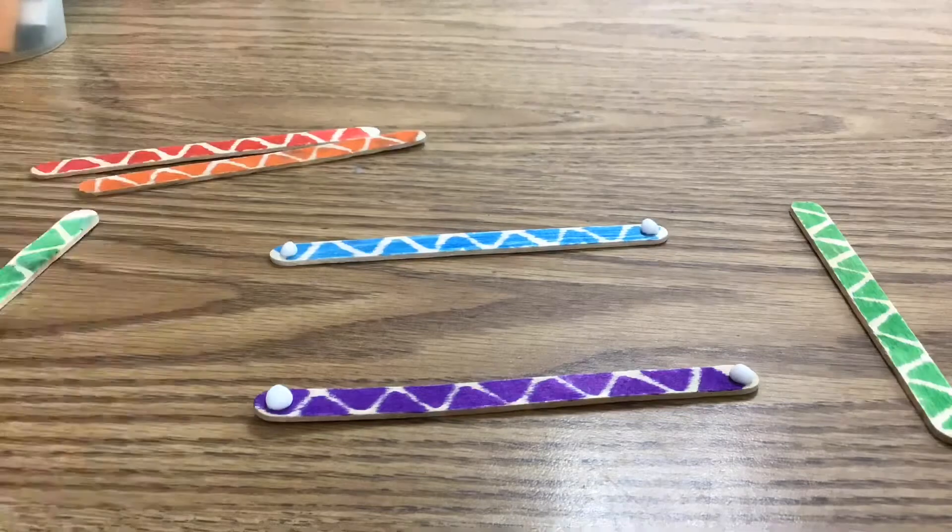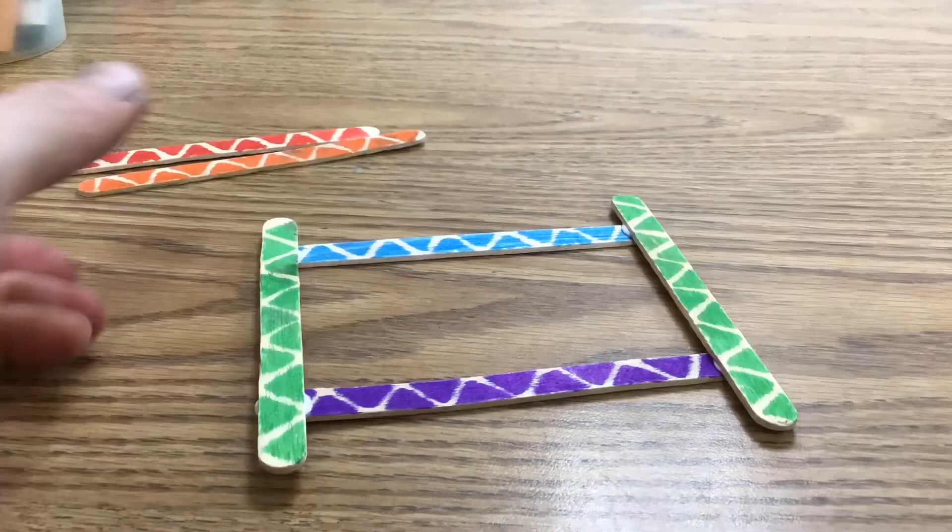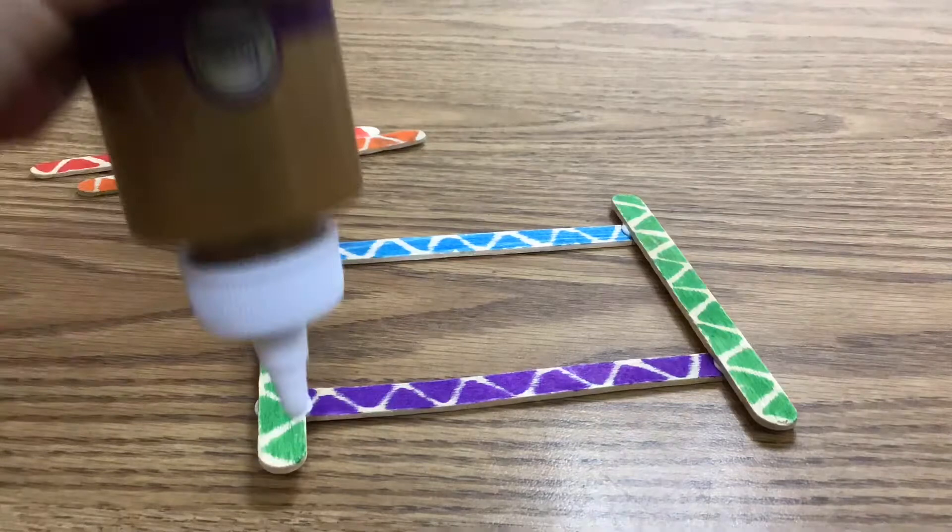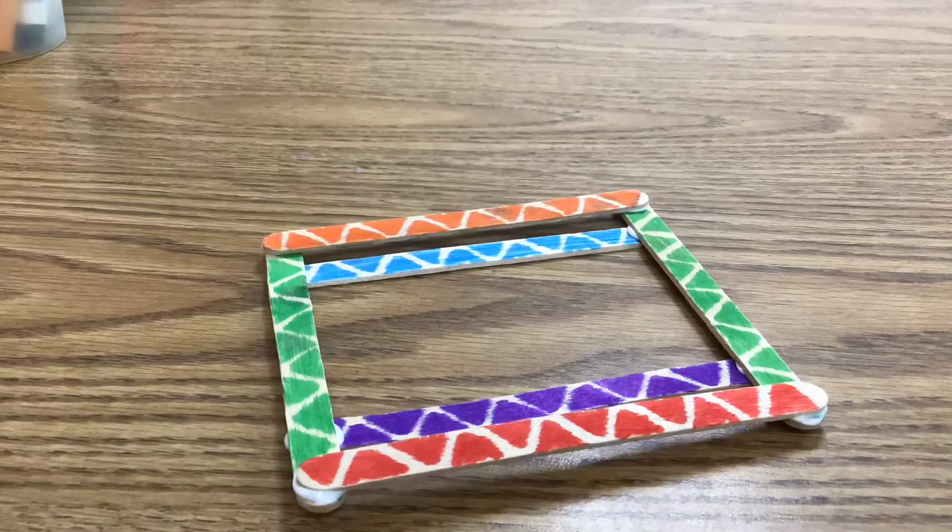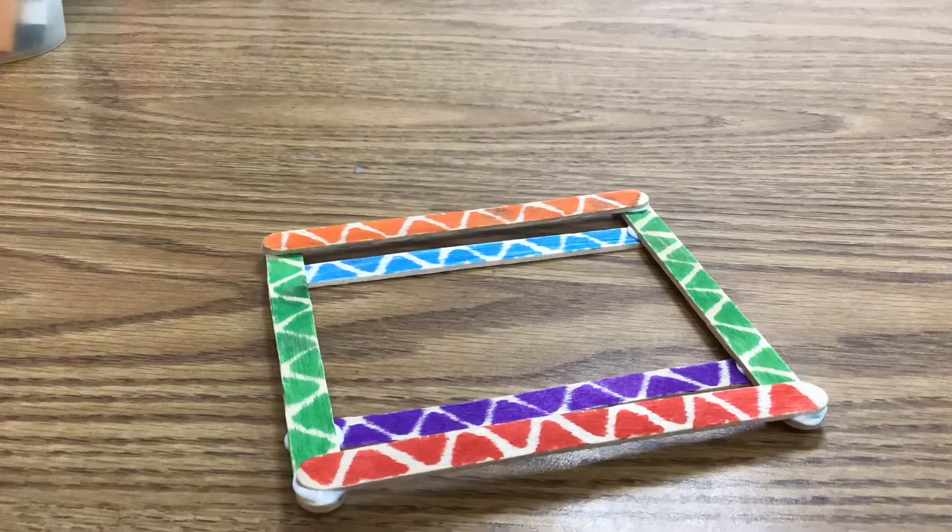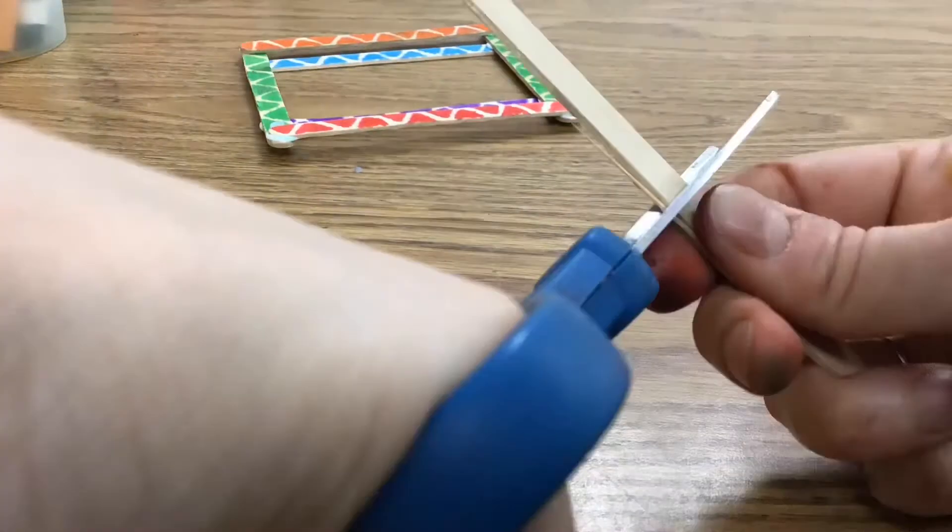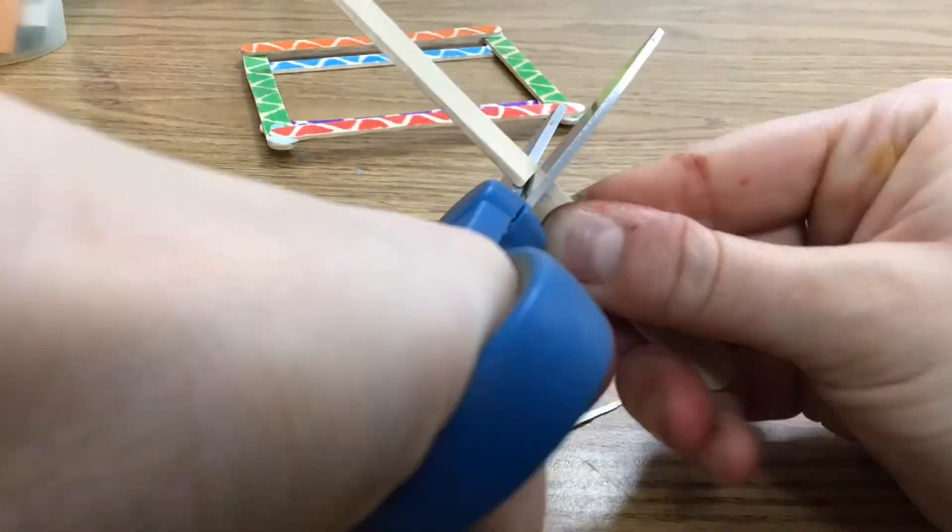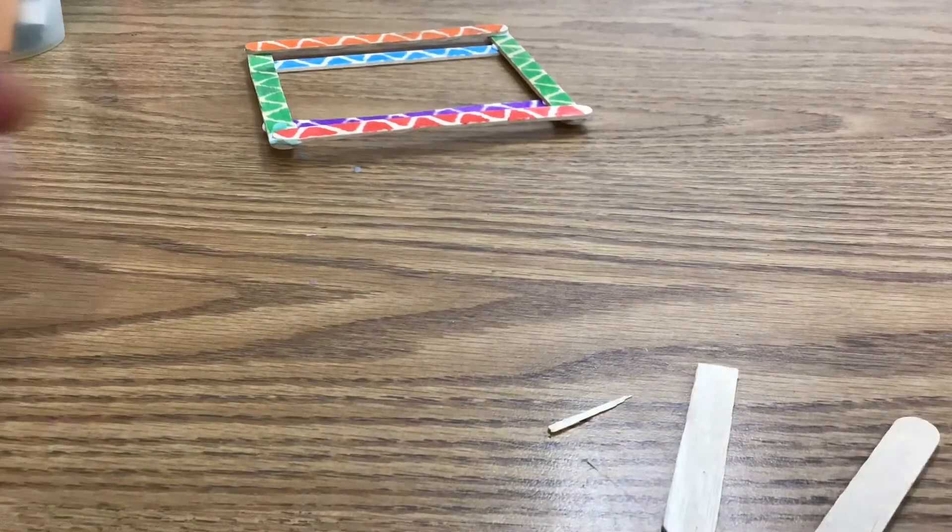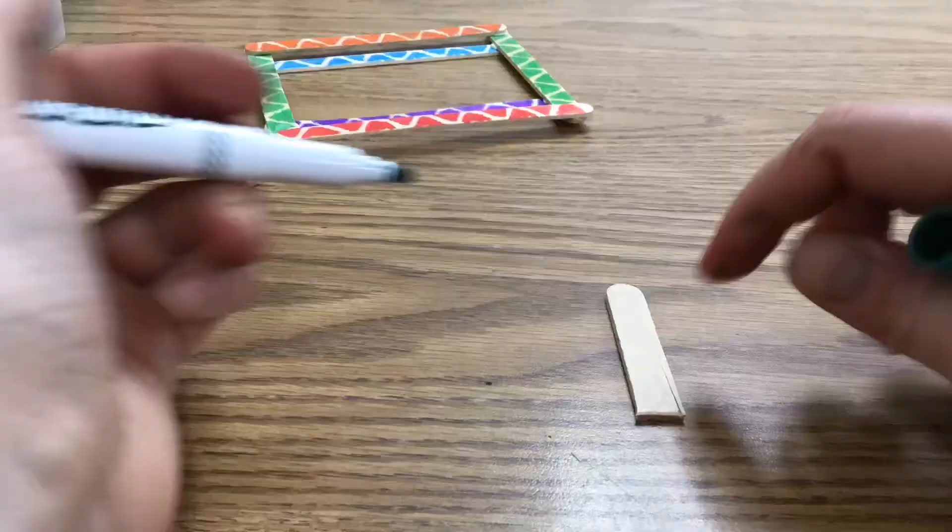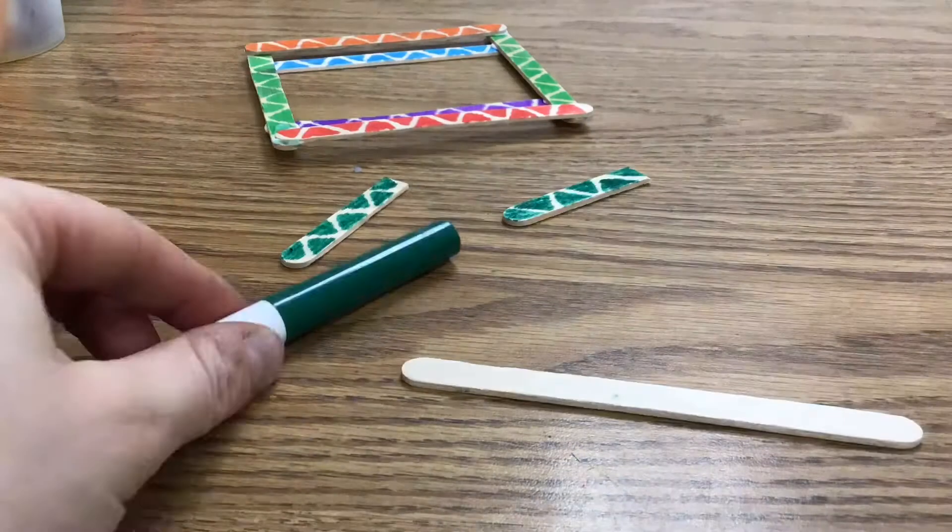Start by making just a square frame. I use six sticks: four for the square frame and two for the back to hold the picture in place. Now I'm going to cut up some popsicle sticks to make some decorations for my frame.